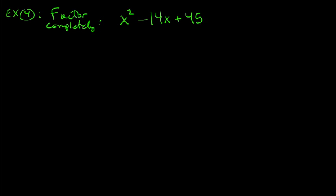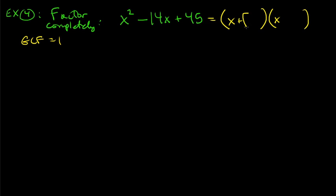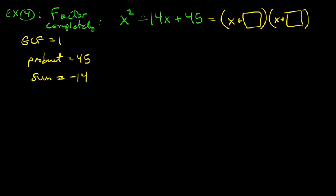Let's try a new example: factor completely x² − 14x + 45. GCF is still 1. It's still a trinomial, so we're looking for (x + ☐)(x + ☐). The product has to be 45 and the sum has to be negative 14.